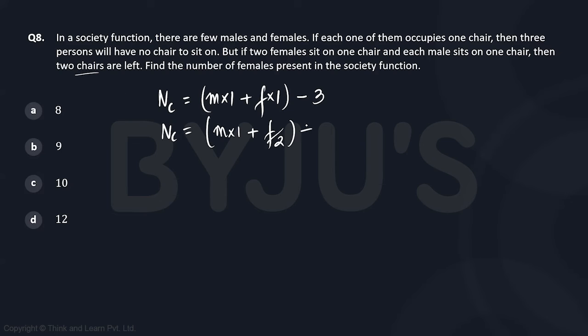Then two chairs are left. Can we say we have two chairs in excess? Now there are two equations and three variables. Of course we won't be able to solve, but let's see what they have asked us: find the number of females present in the society function. So they are asking us to find the value of f, which